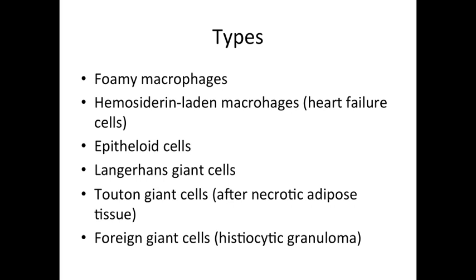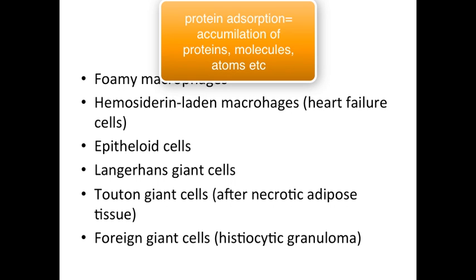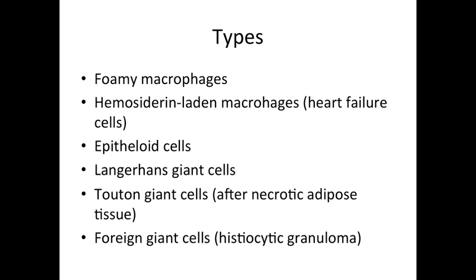The final type of macrophage is the foreign body giant cell, seen in histiocytic granulomas. A good example is silicon implantation, in which your body recognizes silicon as foreign. This causes protein adsorption — essentially accumulation of different protein molecules — and also giant macrophages that can coalesce and form multinucleated structures. One important point about silicon implantation is that it slows down the healing of normal tissue by this injury. And that's all there is to know about macrophages.